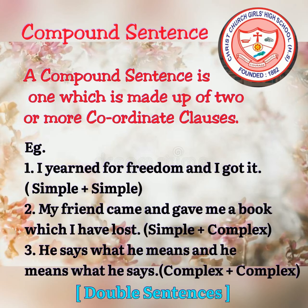When such constructions are formed, we call them double sentences, as each contains two sentences. The first sentence has a simple sentence along with a simple sentence; the second has a simple sentence along with a complex sentence; and the third has a complex sentence along with a complex sentence. These are examples of double sentences, which are a subcategory of compound sentence.